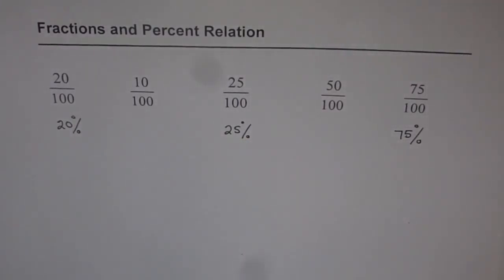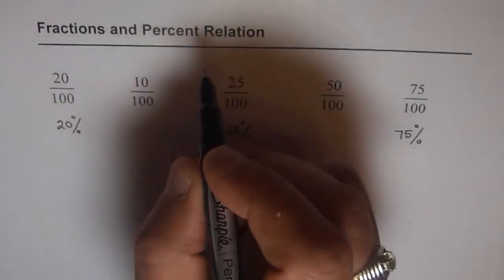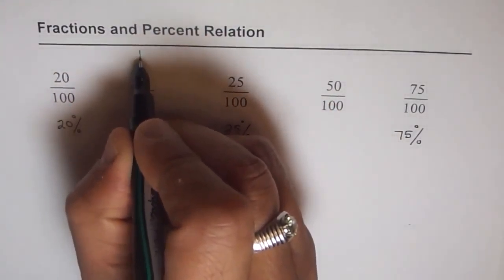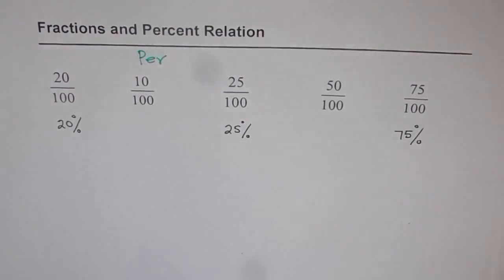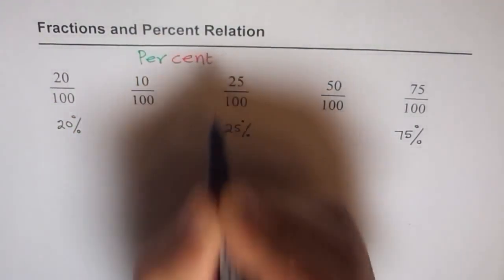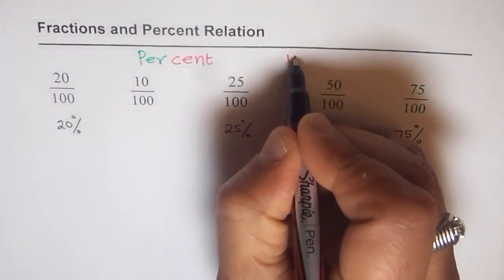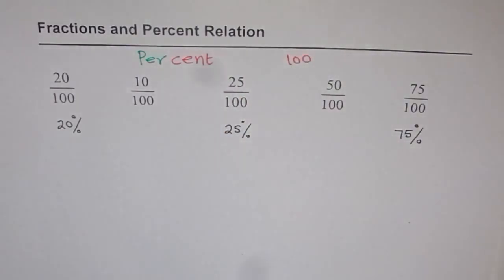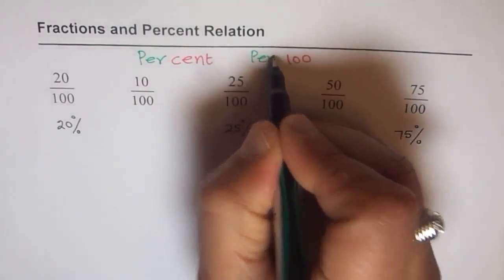Do you get the idea of percent? Cent is like 100, right? So percent is like two terms - per and then cent. Per 100. Per cent. That means per cent is 100 and read like this and understand like this. Per 100.